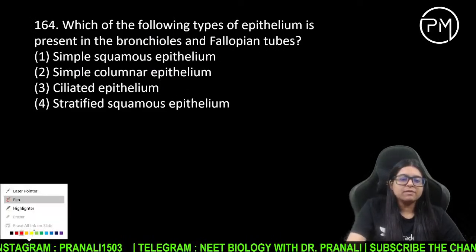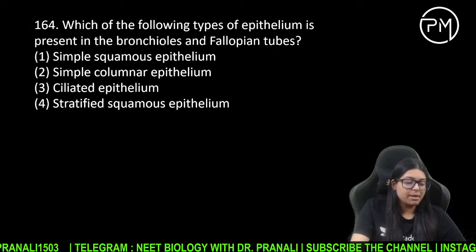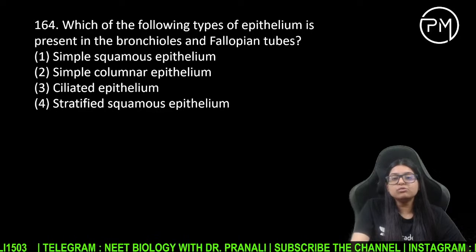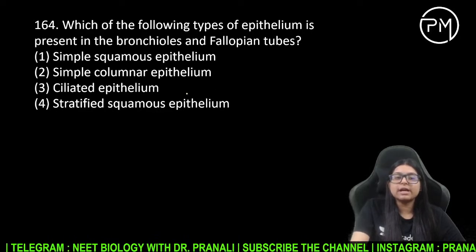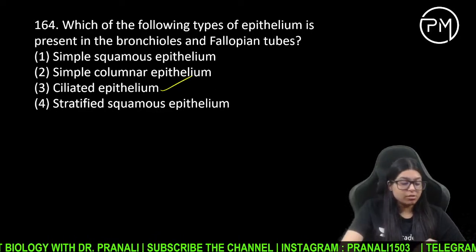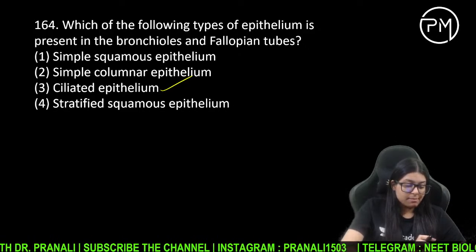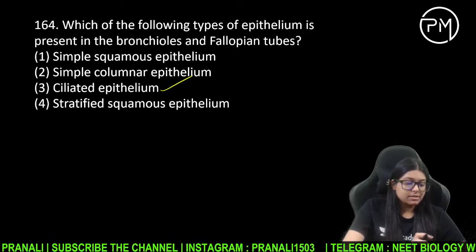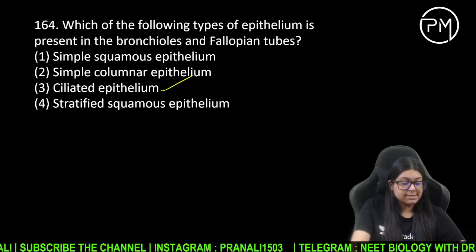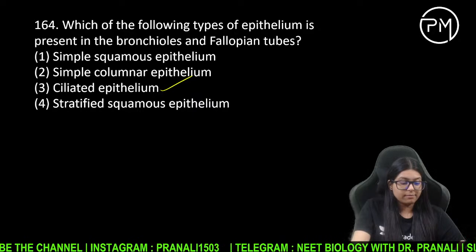Bronchioles and fallopian tube mein kya hai? Yahan par particles ko move karvaana hota hai ek particular direction mein, toh cilia chahiye unke movement ke liye. Yahan par ciliated epithelium hogi.